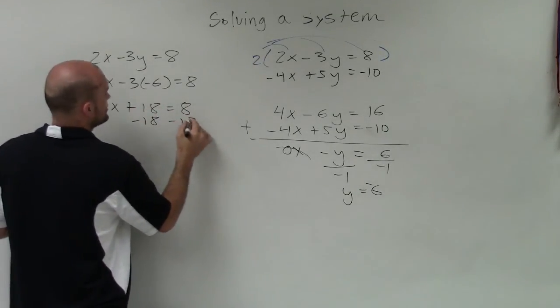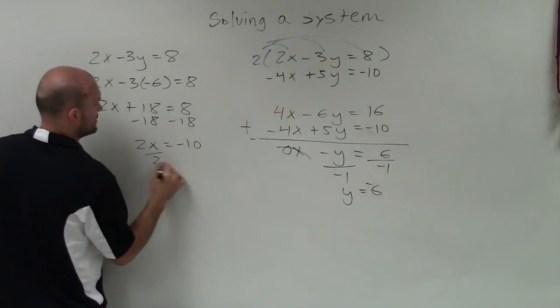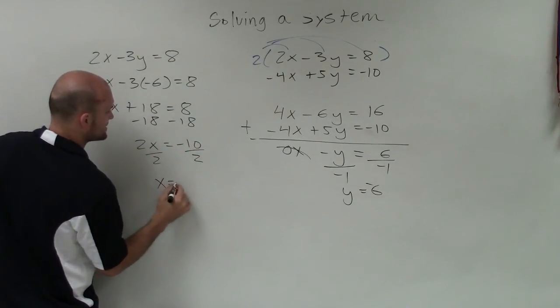Subtract 18 on both sides, and I get 2x equals negative 10. Divide by 2, and x equals negative 5.